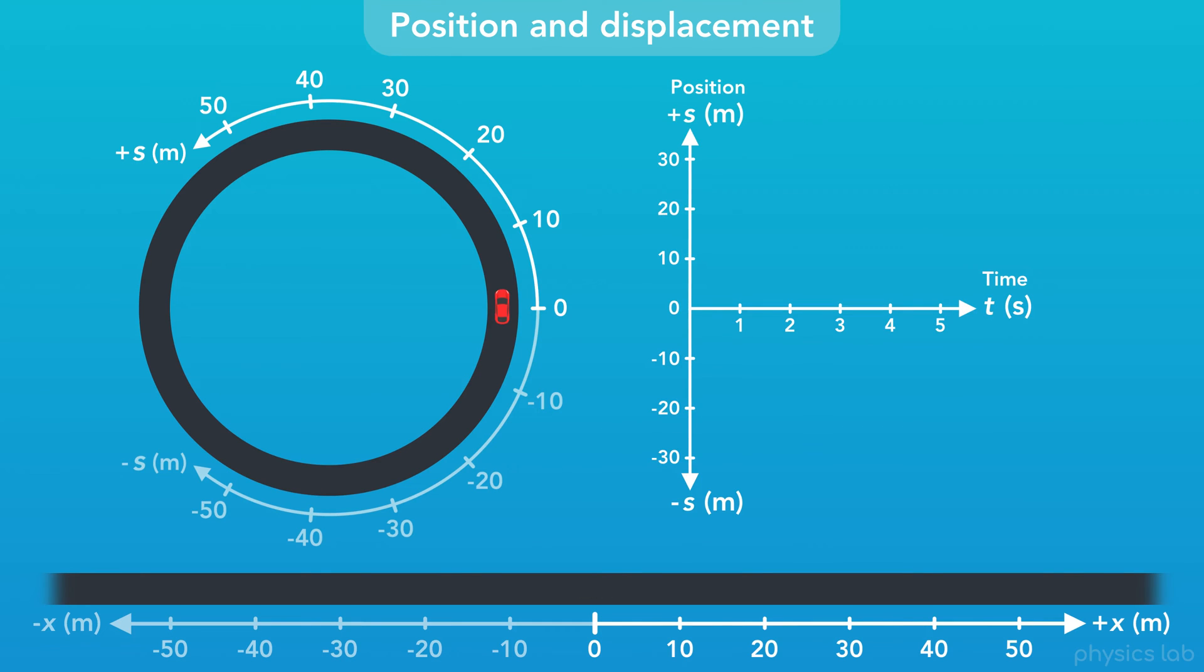As an example, if we graph the position of this car, we can see the car moves to positive 20 meters, reverses direction, and moves to negative 20 meters.